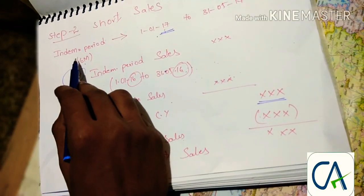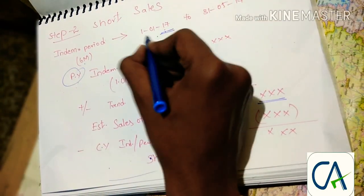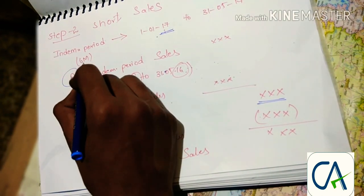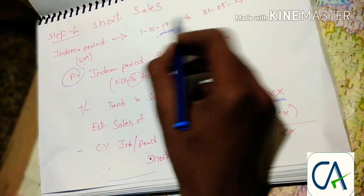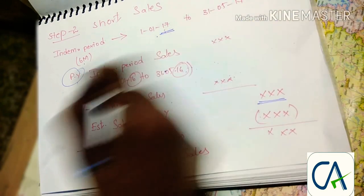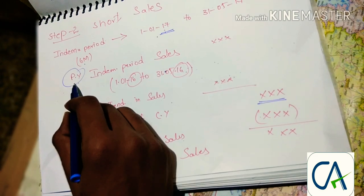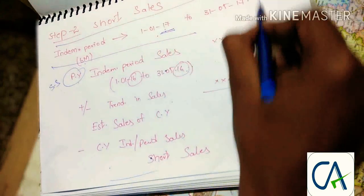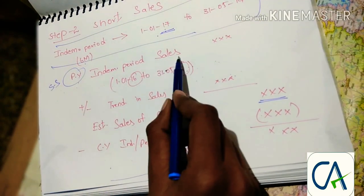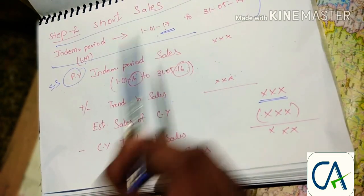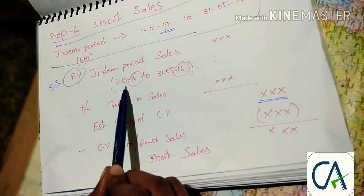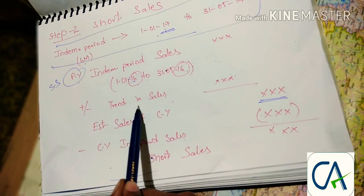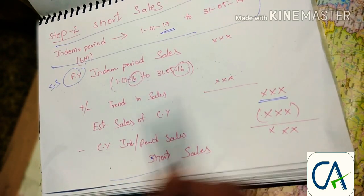Step two: short sales. Short sales relates to the indemnity period. For example, if the fire accident occurred on 1st January 2017 and the indemnity period is six months, then you add six months — that is up to 31st May 2017. For calculating short sales, you take the previous year's sales for the same indemnity period — that is 1st January 2016 to the same period, with only the year changed.